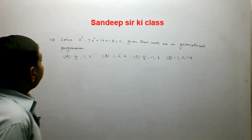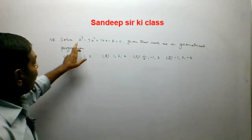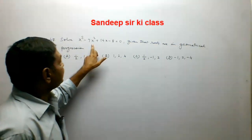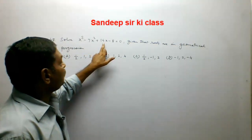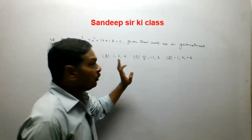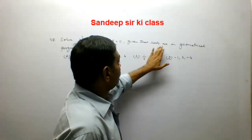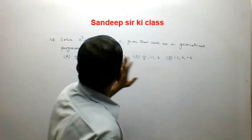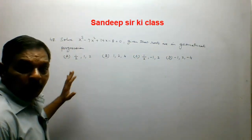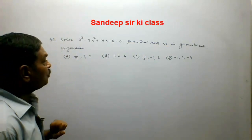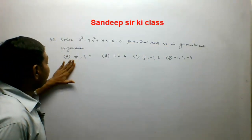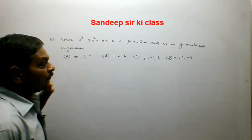Question number 48. Solve x cubed minus 7x squared plus 14x minus 8 is equal to 0, given that the roots are in geometrical progression. Four options are given to us. The first option is 1/2, 1, 2.